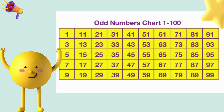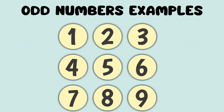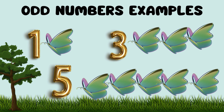Now it's your turn, kids. You tell about these two pictures. Yeah, sure, teacher. I will tell you about this. Here are odd number examples: 3, 5, 11, 13, 15, and the next one is 1, 3, 5, 7, 9.